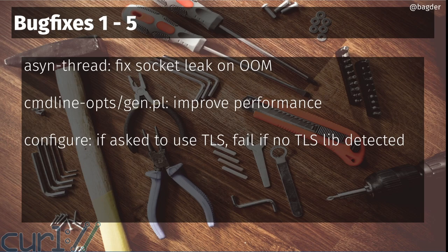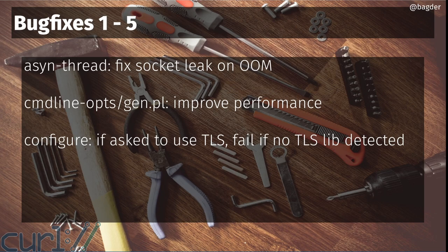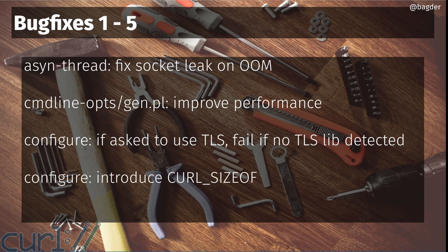Another build fix: when you run configure and specify a TLS library — maybe with a path — and the configure script fails to find it, previously it would silently disable TLS in the build and move on. That was counterproductive, as it took longer for users to notice. Now if you've specified a TLS library and it can't be found, configure will fail and tell you, or direct you to correct your configure line.